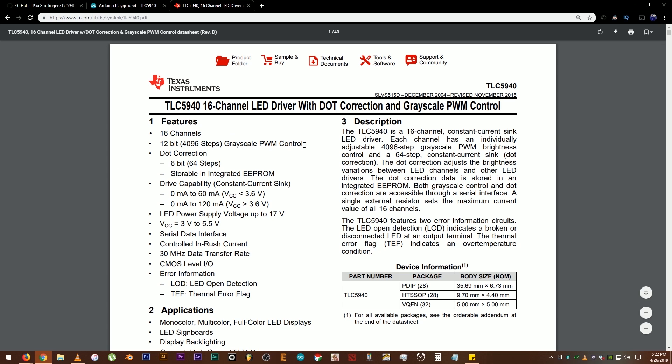It has 16 channels or outputs, 12-bit grayscale PWM control to control the brightness of the LEDs using PWM. Drive capability is 0mA to 60mA if the VCC or power supply is less than 3.6V and 0mA to 120mA if the power supply voltage is greater than 3.6V. LED power supply voltage is up to 17V. VCC is 3V to 5.5V.